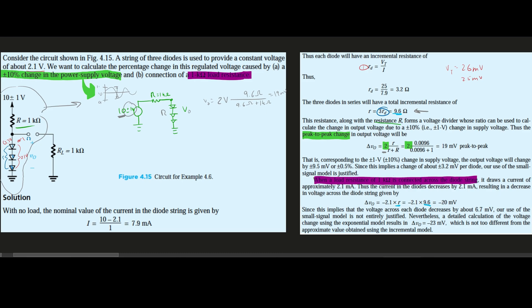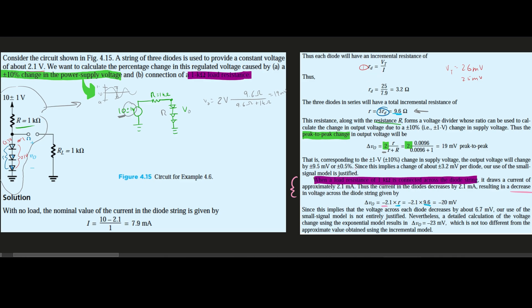The 1 kilohm load draws 2.1 mA, so the diode current decreases — hence the negative sign. Negative 2.1 times 9.6 gives us approximately −20 millivolts. This is conceptually the hardest part. Since the voltage across each diode decreases by about 6.7 mV, the small-signal model is not entirely justified; a detailed exponential model gives −23 millivolts, which is close enough that our approximation is acceptable.